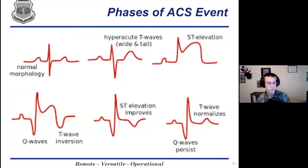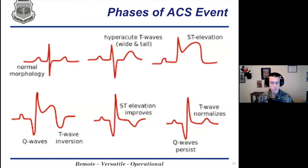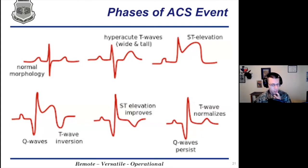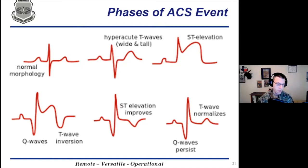Here we can see the phases of a coronary event. You start with a normal EKG strip, then get those hyperacute T waves — super wide, super tall, mainly symmetric. That progresses into ST elevation MI. Once the MI is ongoing, the T wave will go down and invert. Then Q waves will pop up. A significant Q wave signifies heart muscle damage — specifically, a width of one small box, a depth greater than two millimeters, or a Q wave greater than 25% of the QRS height indicates tissue damage from the MI.